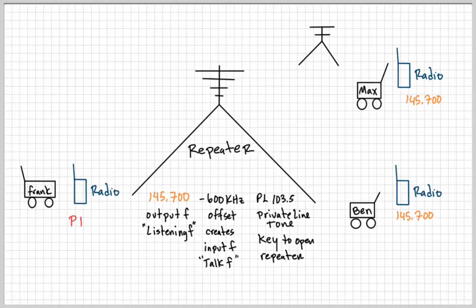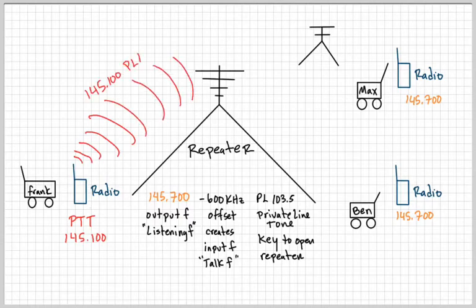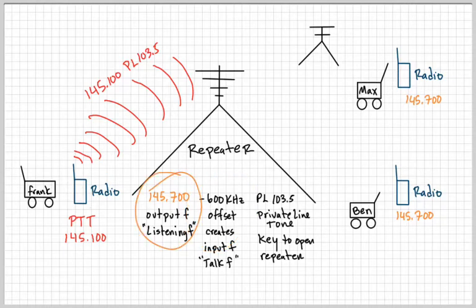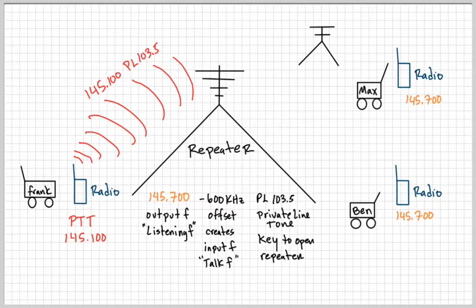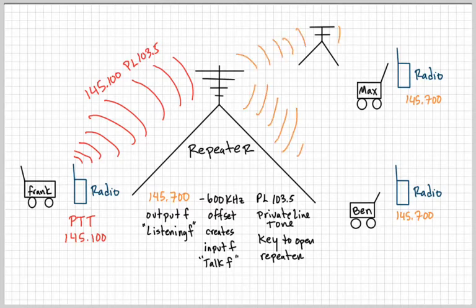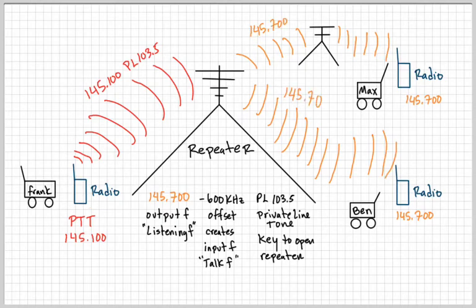Let's say Frank presses his PTT button. If you look at the screen, you'll see that the values change to 145.100. When you press the PTT button, the 600 kilohertz offset — minus 600 kilohertz — is taken away from 145.700 to create another frequency. That is being transmitted into the repeater with the PL tone. The repeater is listening for 145.100 and also listening for that private line tone. When that happens, all the other radios — Max and Ben — will be able to hear what you're saying.